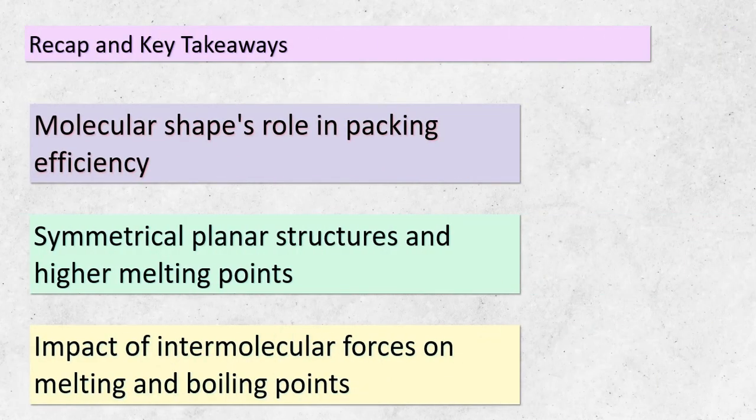Let's wrap up with a summary of our remarkable journey. We've explored how molecular shape influences packing efficiency and, consequently, melting and boiling points. Symmetrical planar structures like benzene lead to higher melting points due to efficient packing. Intermolecular forces, which depend on how well molecules are packed, affect both melting and boiling points. And then we met phenol, where the OH group forms powerful hydrogen bonds, leading to higher melting and boiling points compared to benzene. Every molecule's structure holds a tale of its properties waiting to be unraveled.